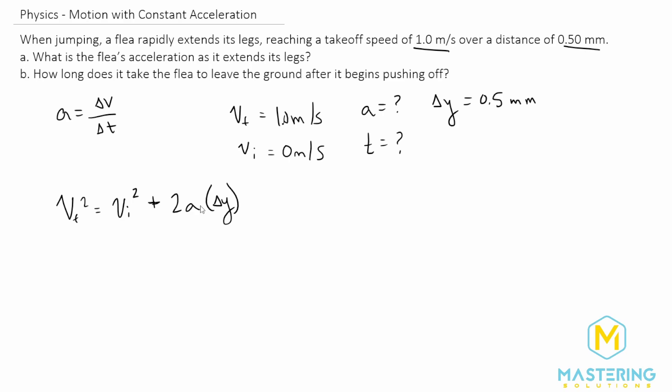So now we need to rearrange the formula here to solve for acceleration. So we've already said that the initial velocity is zero so this can go away. So we have v final squared is equal to 2a delta y. Now we're going to isolate a by dividing both sides of the equation by 2 delta y. Now the 2 will cancel, the delta y will cancel, and we'll be left with acceleration is equal to the v final squared over 2 delta y.